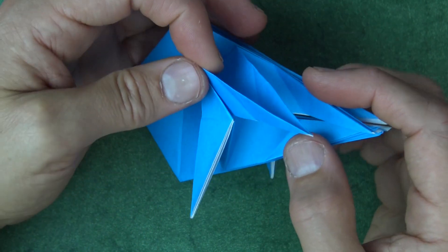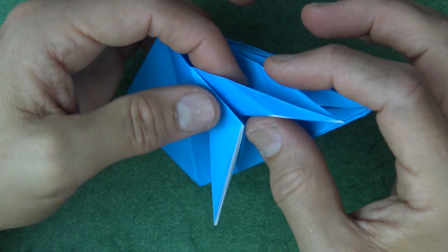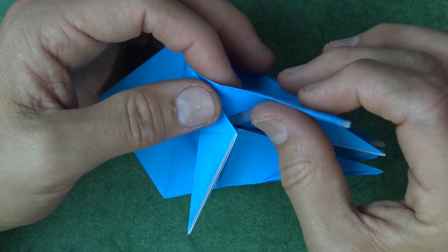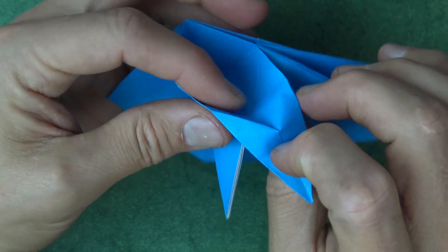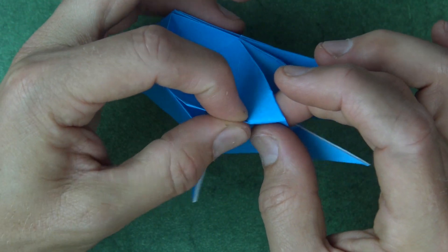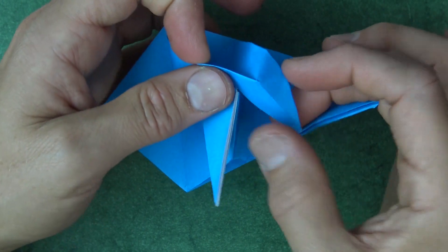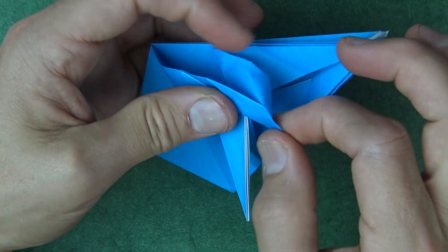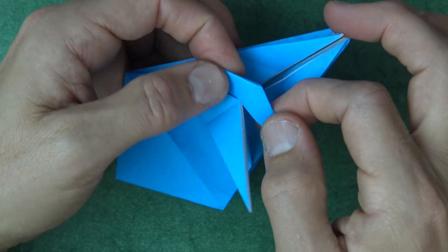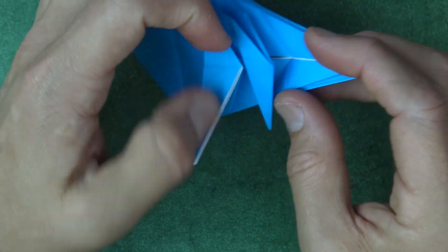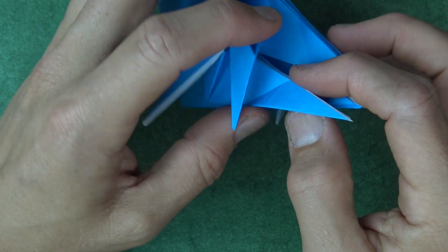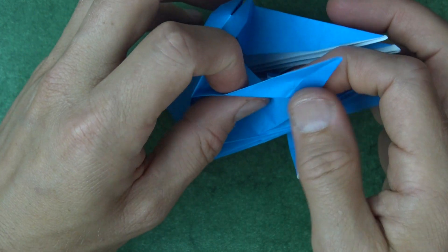Okay, so we got our creases, now we're going to outside reverse fold. So fold it like this, open it, and flip it over, like that. And fold on that crease, and on this crease, and flatten it. So there's one outside reverse fold, and let's do the rest.